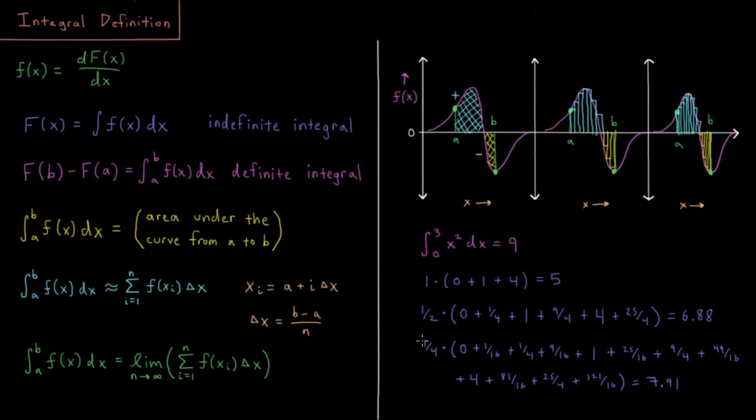If you do rectangles of width one fourth, then we have twelve rectangles there. And the area of those rectangles adds up to seven point nine one. So getting better.